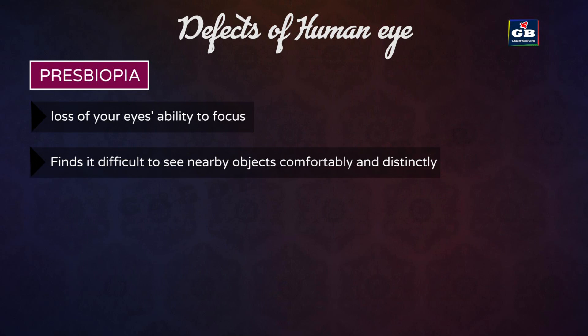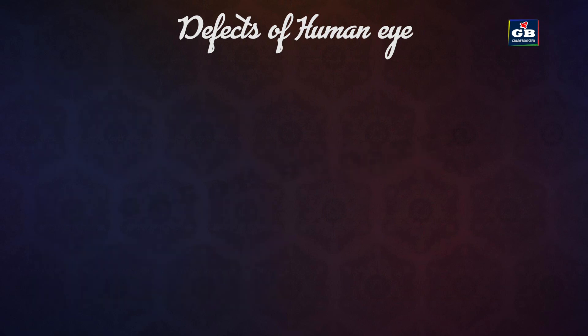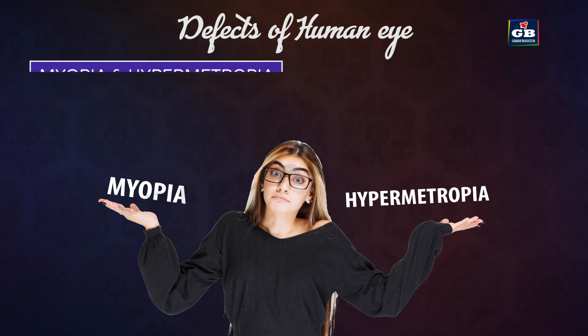Presbyopia is the gradual loss of the eye's ability to focus on nearby objects. Presbyopic people find it difficult to see nearby objects comfortably and distinctly without corrective eyeglasses. This defect arises due to the gradual weakening of the ciliary muscles and diminishing flexibility of the lens.